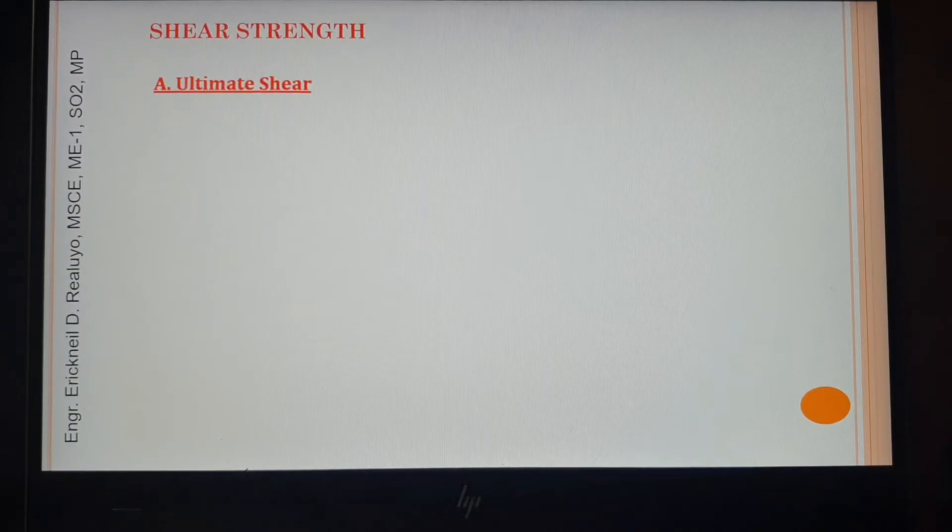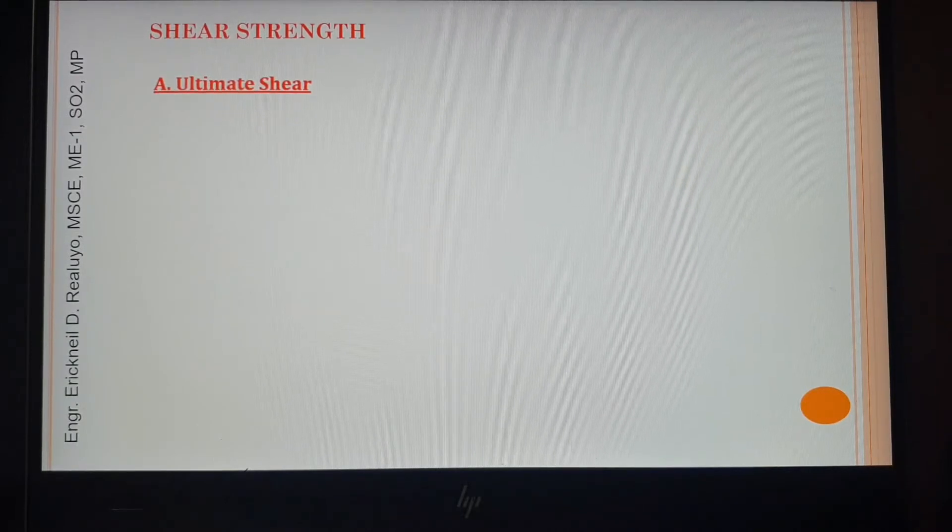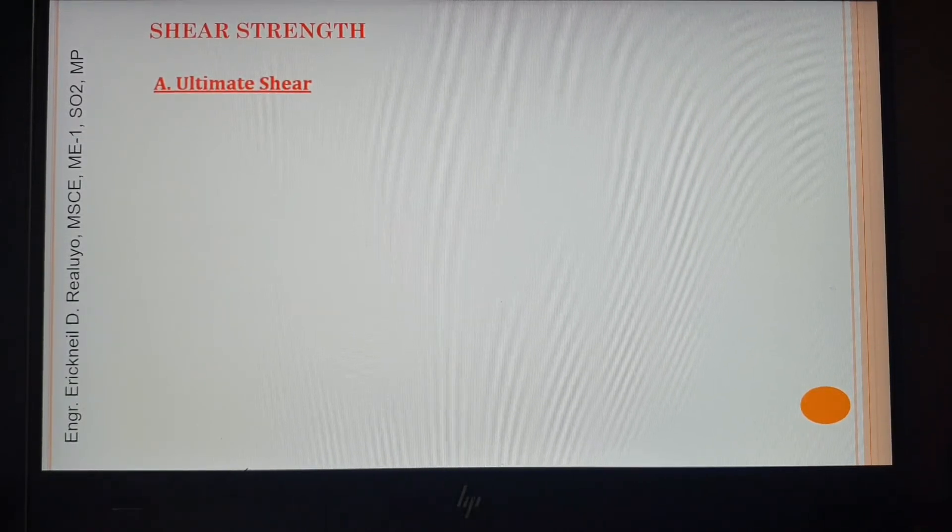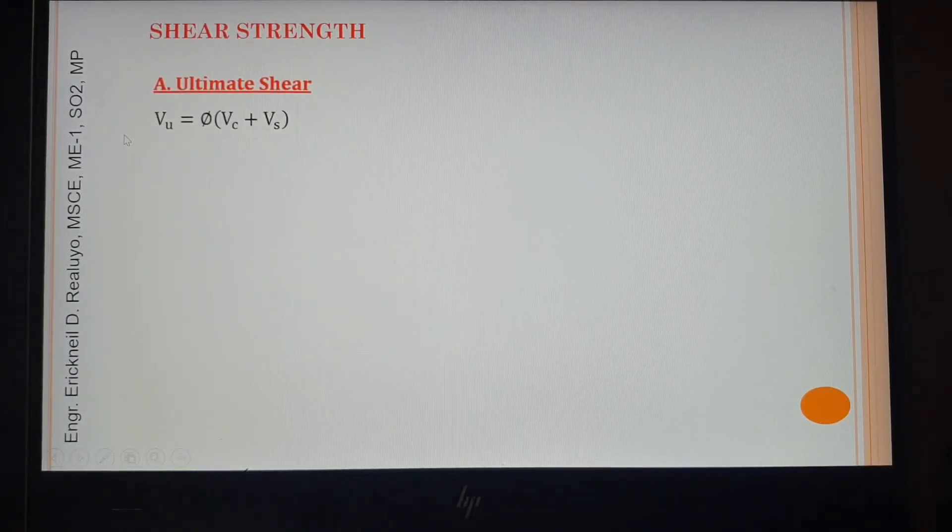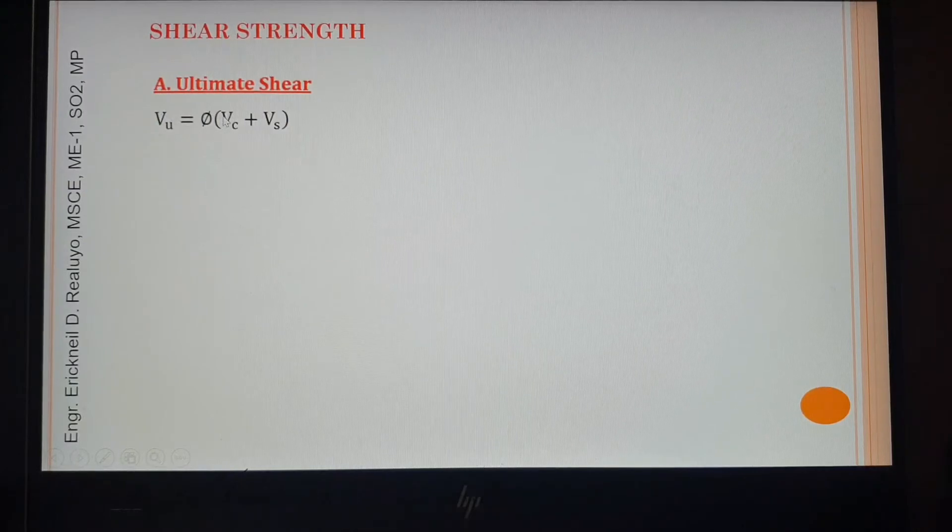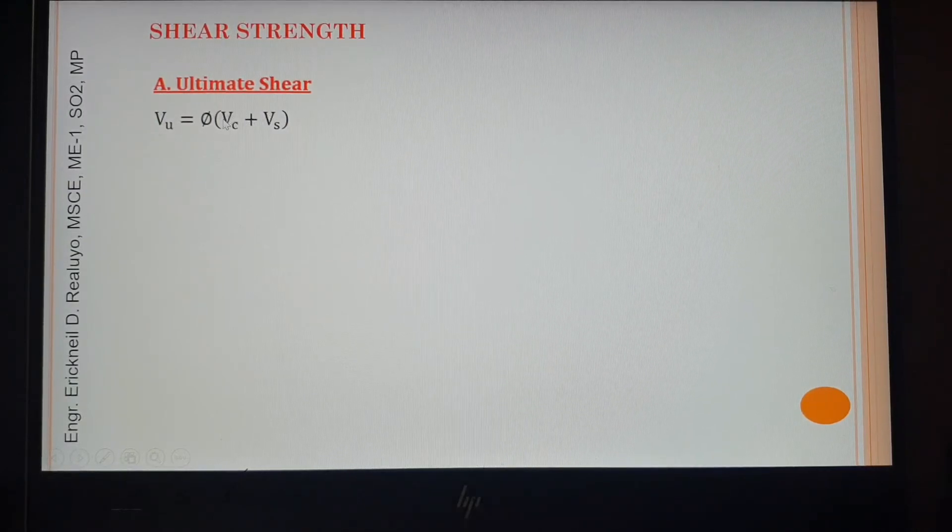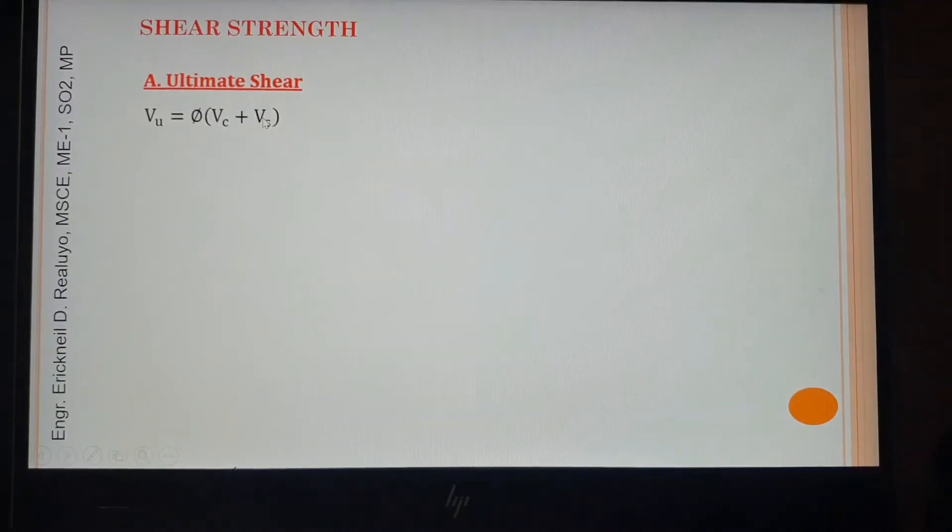Shear strength of concrete. Letter A, the ultimate shear force. This is the formula. Vu is the shear force to be resisted by Vc and Vs. This Vc is the concrete strength and this Vs is the steel strength. This steel strength will be provided by stirrups, ties, and spirals, or in general they are the so-called shear reinforcements.